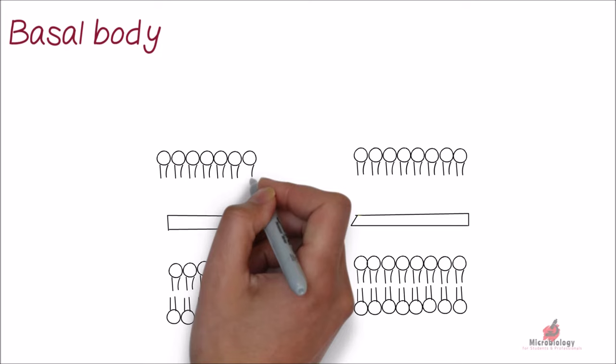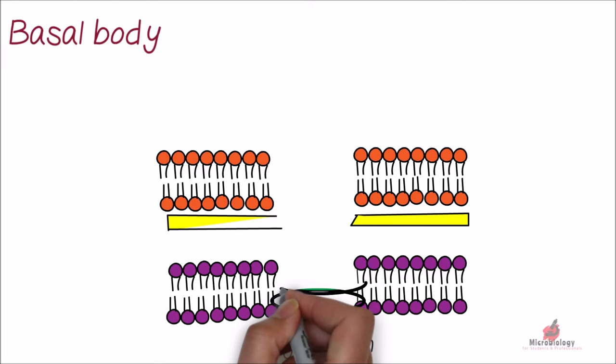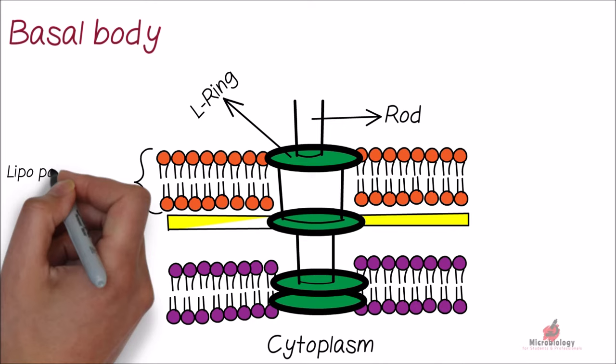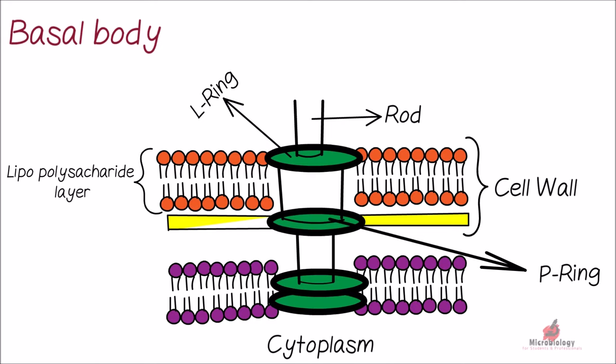The basal body in gram-negative bacteria has four rings connected to a central rod. The L ring remains outside and fixed in lipopolysaccharide layer of the cell wall. The P ring remains next to the L ring and fixed in the peptidoglycan layer. The S and M rings are placed in the cytoplasmic membrane.